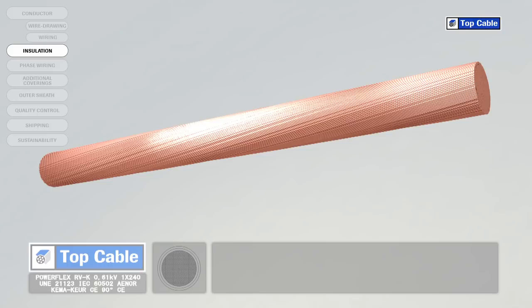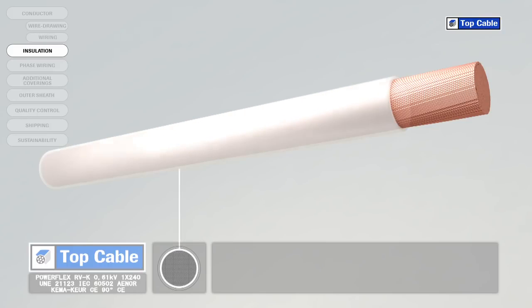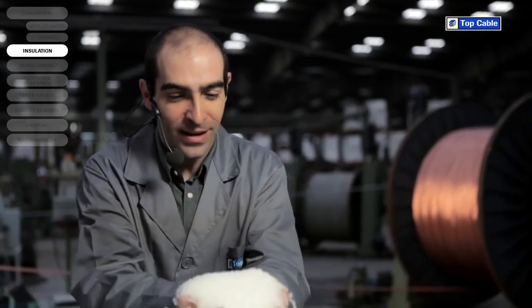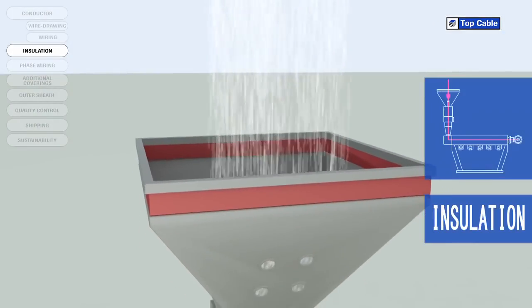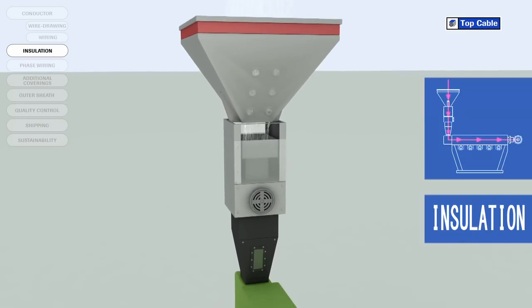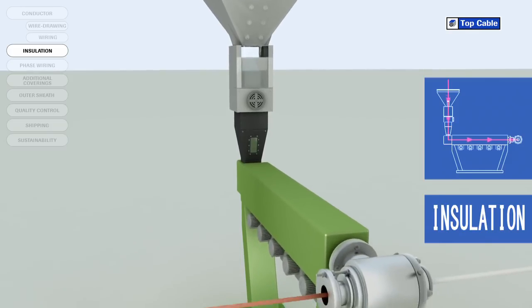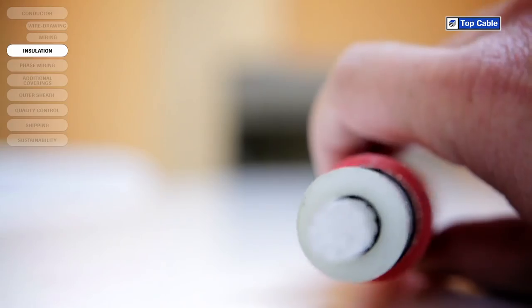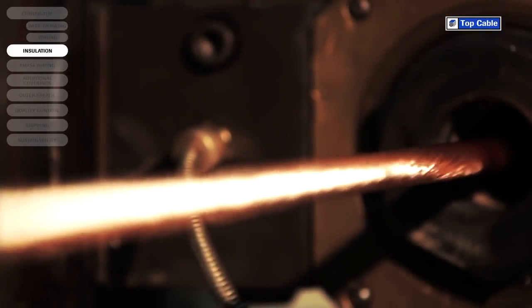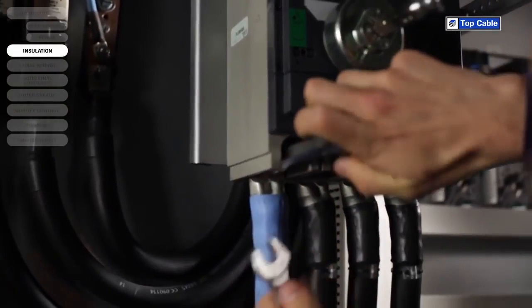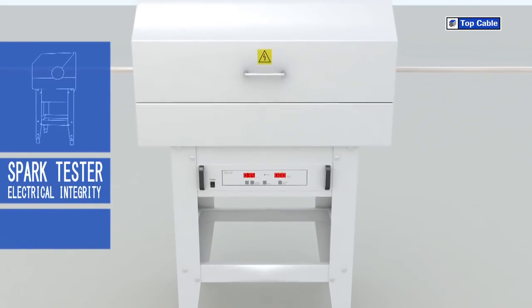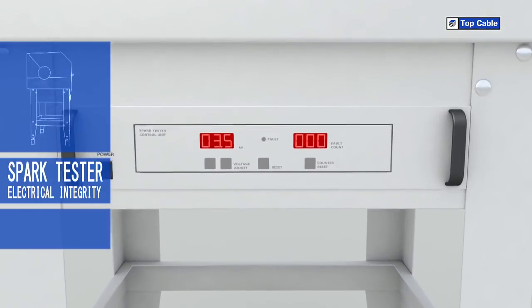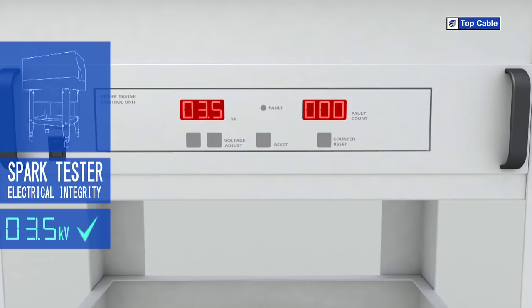The next process in the manufacture of electrical cables is the insulation. This is when we place an insulating cover over the conductor to prevent current leakages. The insulating material is added by a process of extrusion at high temperature. Several insulating materials may be used — PVC, EPR, XLPE, etc. — depending on the characteristics of the cable required. The quality of an insulation material depends on two basic characteristics: its insulation capacity and its heat resistance. The material's insulation capacity and its thickness determine the cable's maximum service voltage. An insulation material with a high heat resistance allows the conductor to transmit more power than the same cross section with an insulation with a lower heat resistance. The whole length of the cable undergoes a voltage test to ensure the insulation layer does not have any faults.